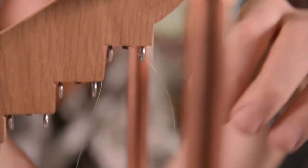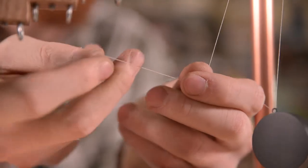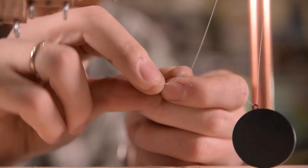After threading the string through the weight and the two eye hooks, I made a simple knot, making sure to align it with the two markings from before.